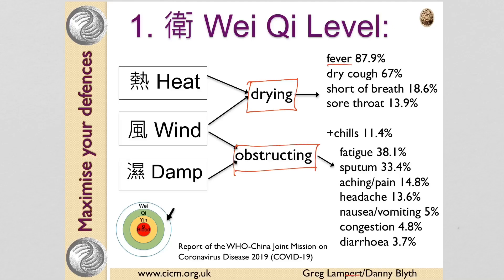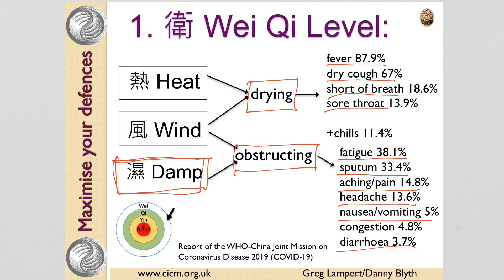These give us symptoms like fever, dry cough, shortness of breath, sore throat, and all the damp obstruction. This can appear in the muscles as fatigue, in the lungs with sputum, and also in the digestive system. This condition is being described as a damp pathogen — damp is very predominant in the early stages. At this stage we want to release the exterior and transform damp.